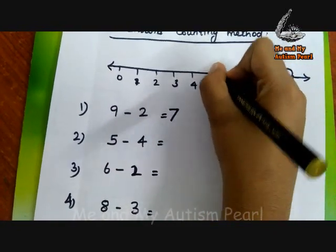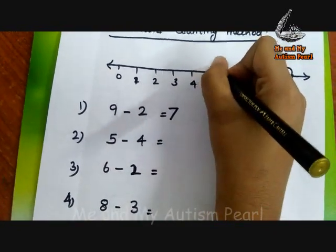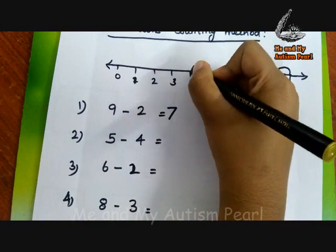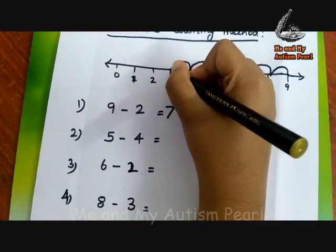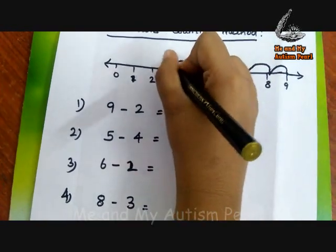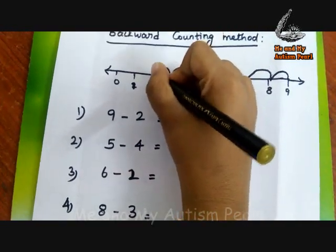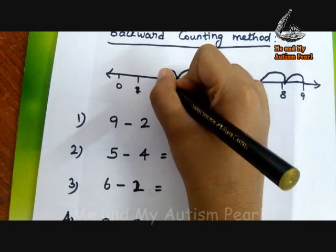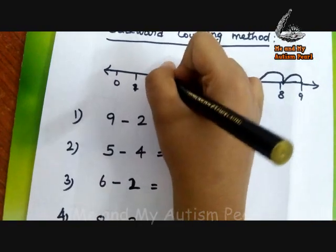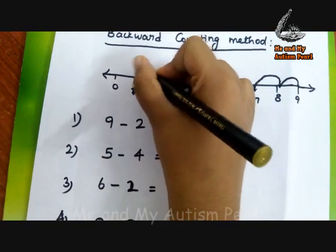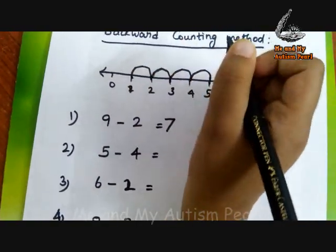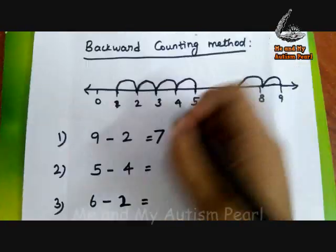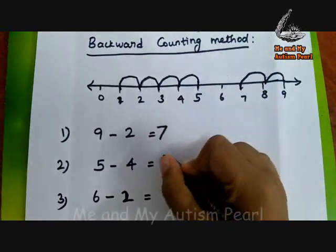Five minus four. Five minus one is equal to four. Five minus two is equal to three. Five minus three is equal to two. Five minus four is equal to one. Correct.